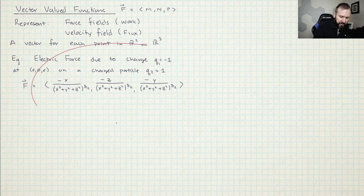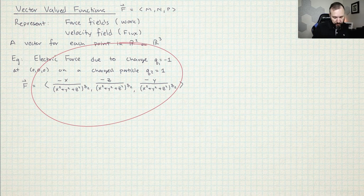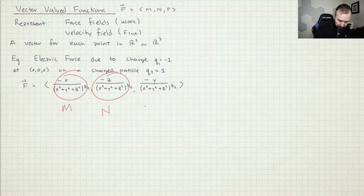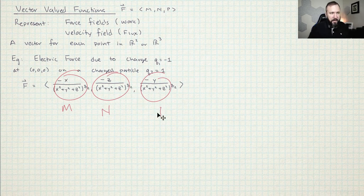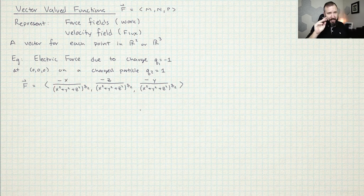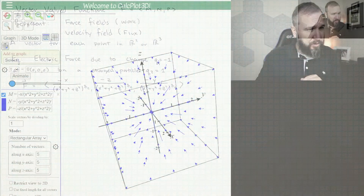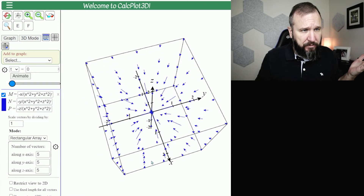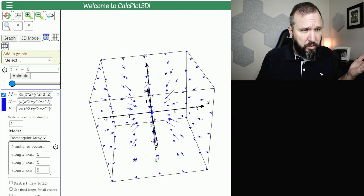Here is Coulomb's Law — the force on a positively charged particle by a negatively charged particle. In this example, the circled components are M, N, and P. You can't really graph these because there is a vector at each point in space, so there are a lot of vectors. What you do is just graph some of them to get an idea of what it looks like. This is Coulomb's Law right here — I think it's a really beautiful picture.